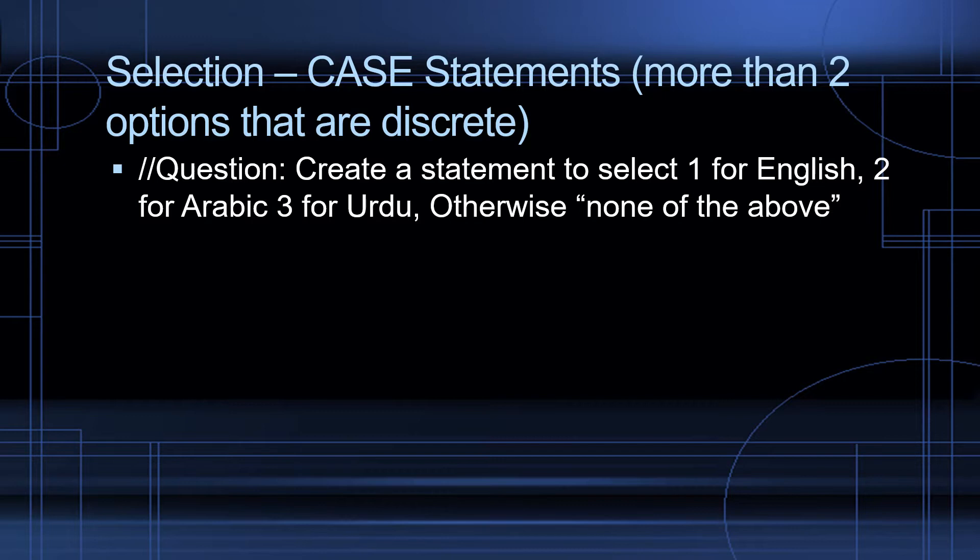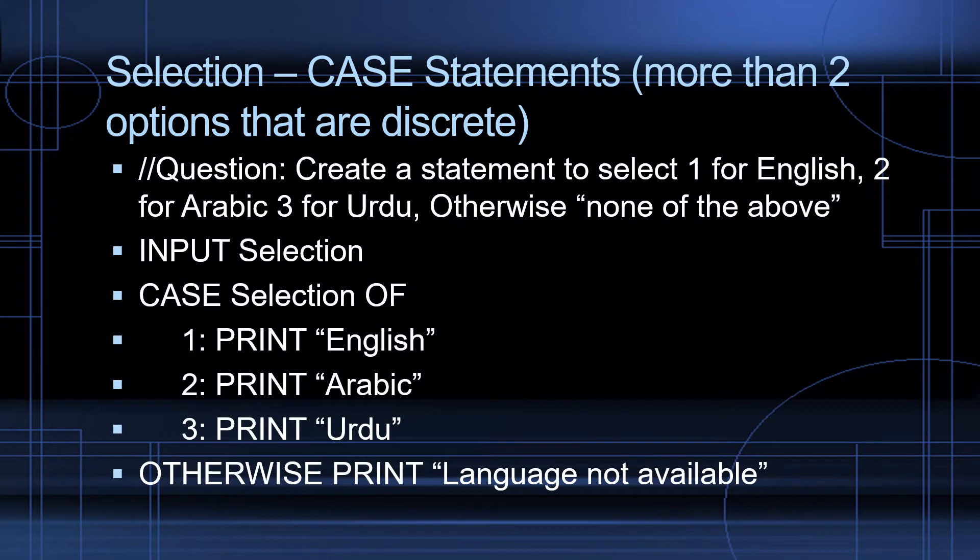For example, create a case statement to select one for English, two for Arabic, three for Urdu, otherwise none of the above. Sometimes we hear that on the telephone when we make a call. Here's how we would write that in programming. First, we need to input the name of the variable, so we're going to input selection. Now, the person has typed either one, two, three, or something else. So here's the case selection of, if they chose one, print English. If they chose two, print Arabic. If they chose three, print Urdu. Otherwise, print, that language is not available.